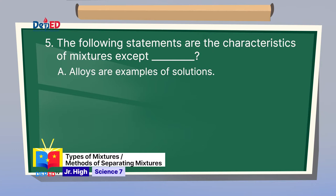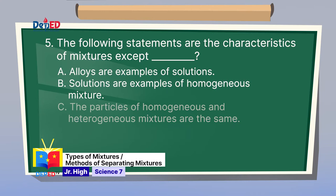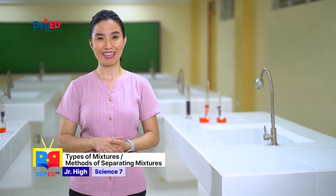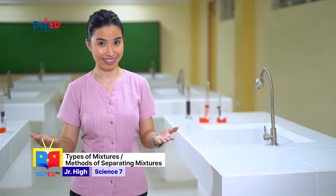Number 5: The following statements are characteristics of mixtures except: A. Alloys are examples of solutions. B. Solutions are examples of homogeneous mixtures. C. The particles of homogeneous and heterogeneous mixtures are the same. D. Homogeneous and heterogeneous mixtures differ in arrangement of their particles. Among the choices, letter C does not describe a mixture. How was the pre-assessment? Did you find it hard?